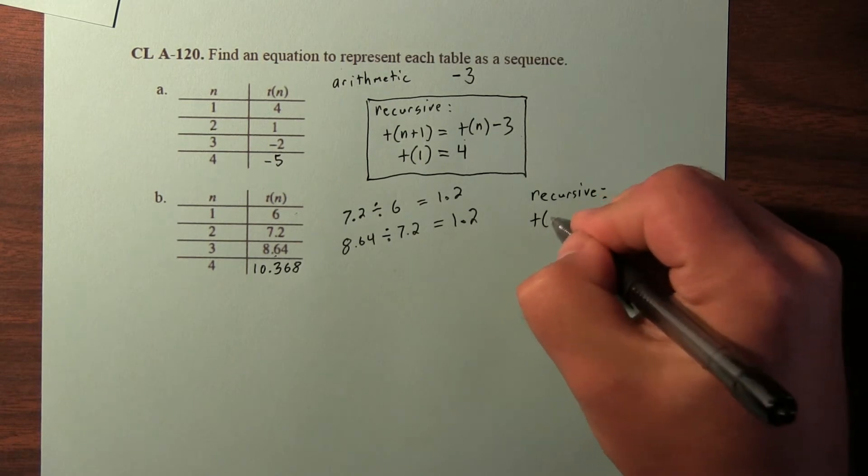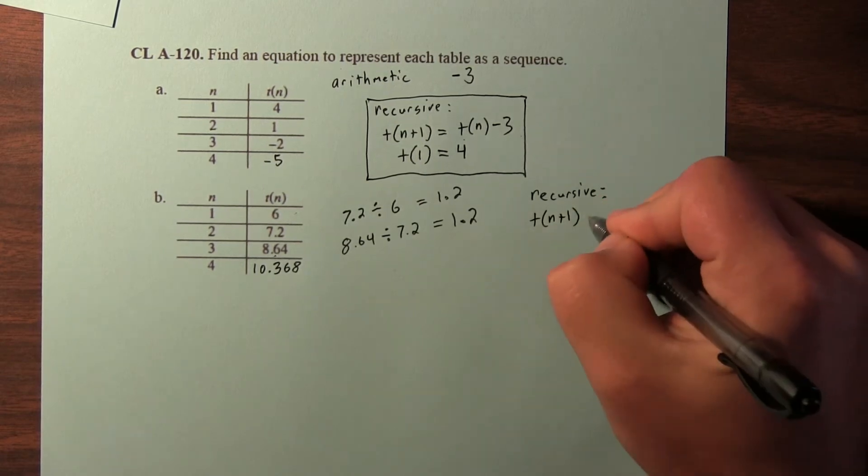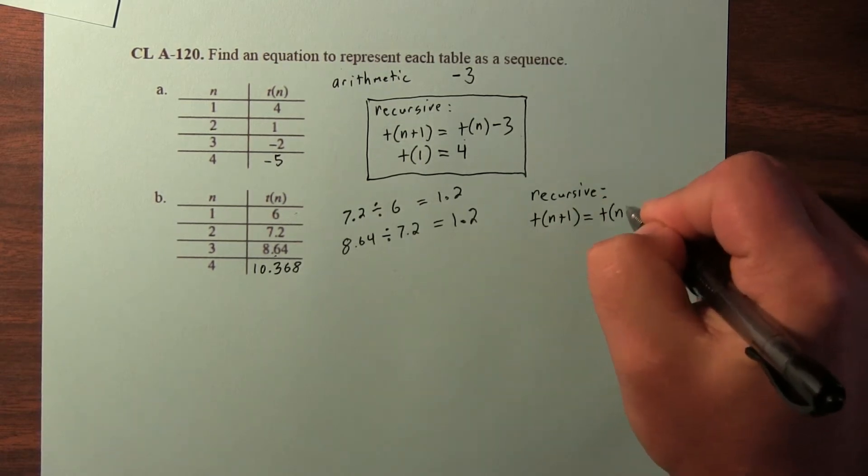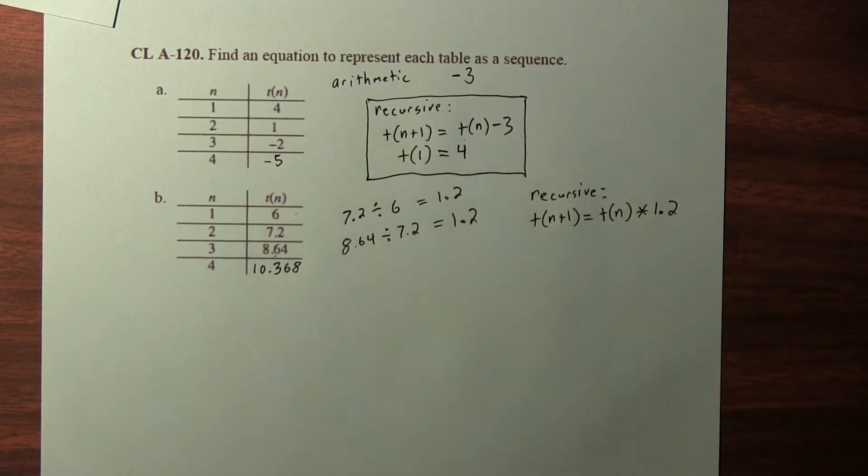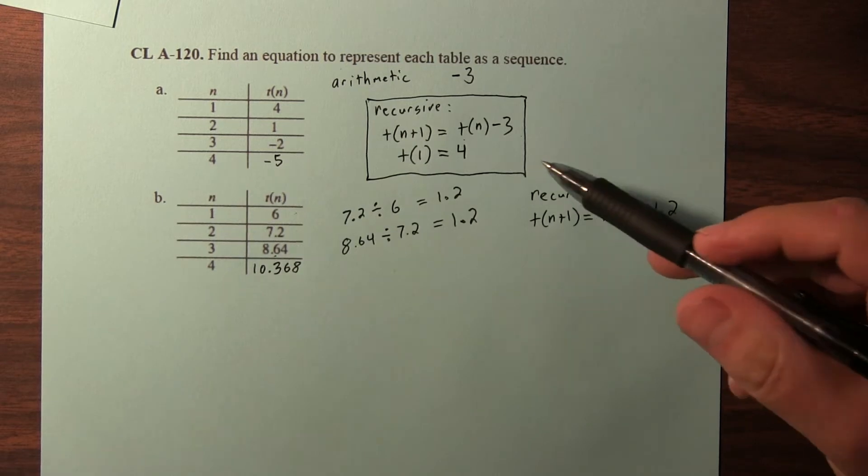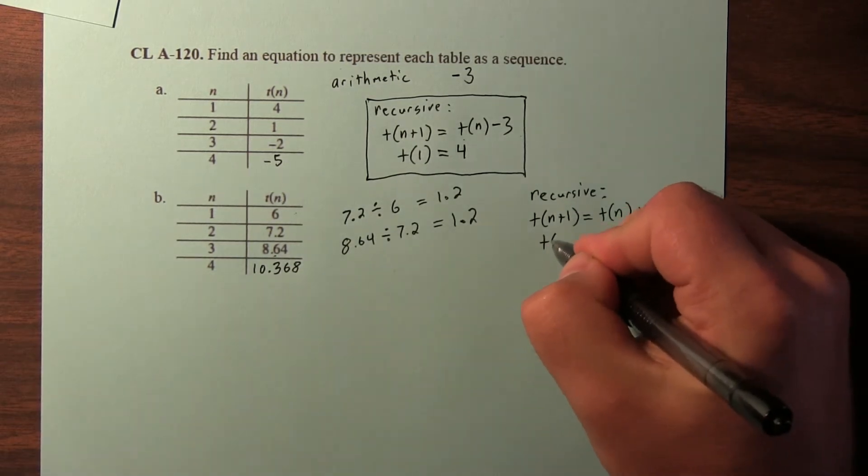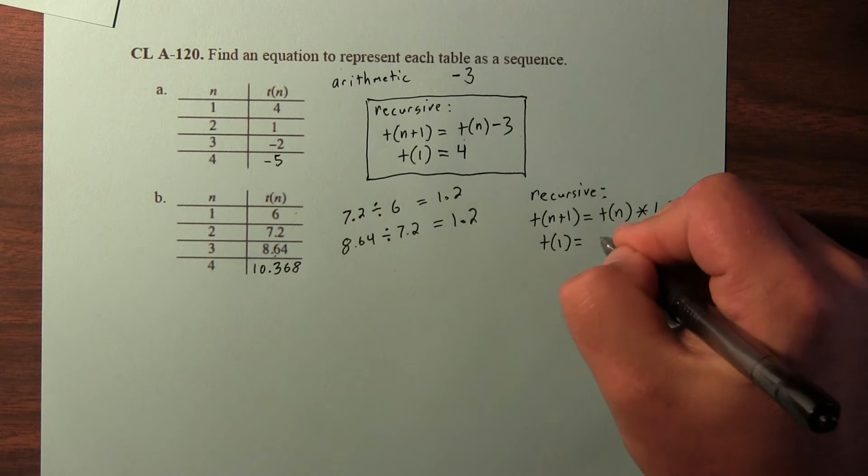To find the next term, take the previous term and multiply by 1.2. And just like above, we need to give a starting term. So we can say the first term is 6.